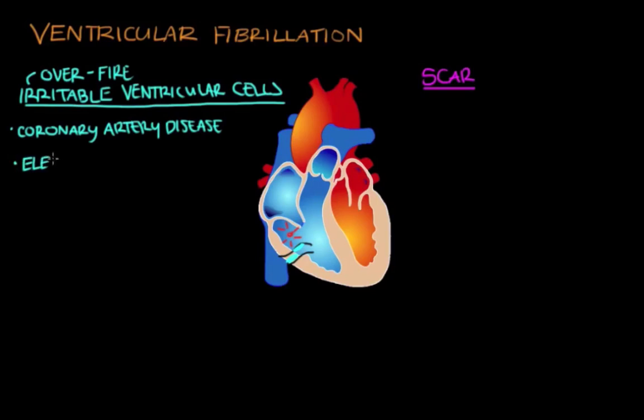Also, certain electrolyte abnormalities like high potassium or low calcium or low magnesium might cause ventricular cells to become irritable. And why is that? Well, electrolytes play an important role of normal electrical conduction in the heart. And you can imagine if the electrolytes don't have the right levels, this could disrupt normal electrical conduction through the heart.